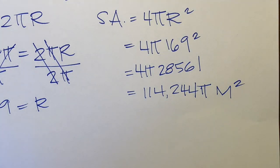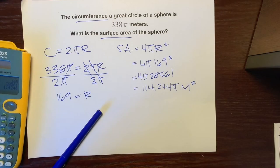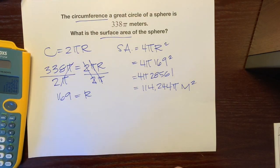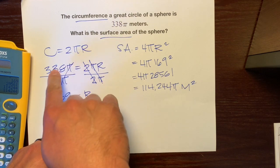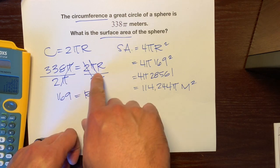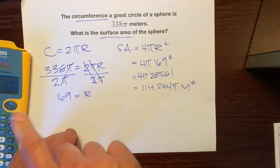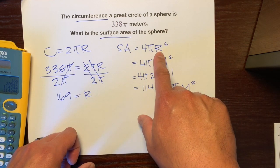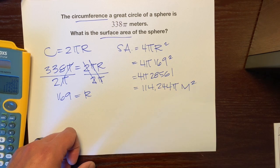So what we did, again, as a quick recap: we used the circumference formula and set it equal to the actual circumference of the great circle. And we got the radius from that. And we took the radius and plugged it into the formula for surface area, and we got the surface area right there.